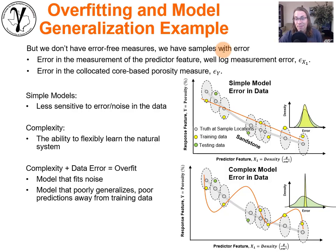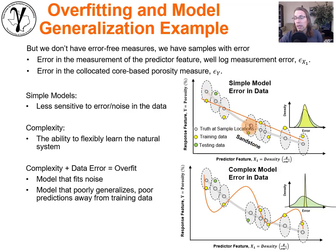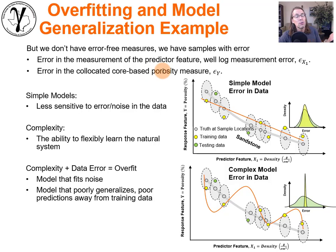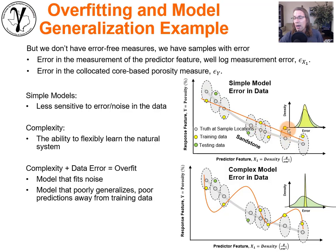That's our fundamental problem. There's error in the measurement of the predictor feature — the well log measurement — so there's error on the horizontal axis. And the error in the vertical direction relates to the response feature, porosity, which we must have measured by extracting core samples and actually doing porosity calculations. Instead of error-free values, we have values with error.